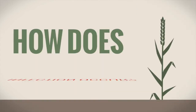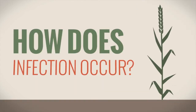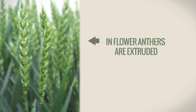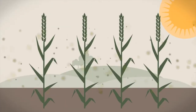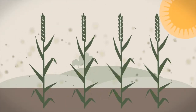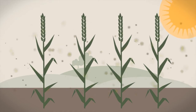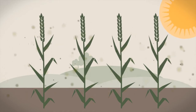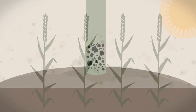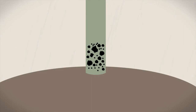How does infection occur? Infection occurs when the disease is in contact with the ear of the plant, when the plant is in flower and the anthers are extruded. Fusarium Graminearum and Microdocium use warm, wet, humid periods to release wind-borne ascospores which travel through the crop. Rain splash events can also be responsible for the transfer of Fusarium Culmorum and Microdocium inoculum to the ear.